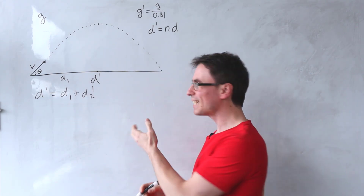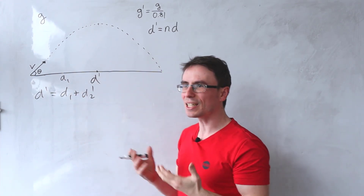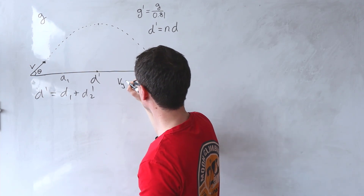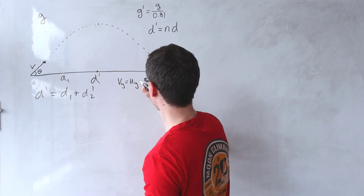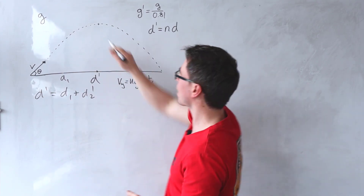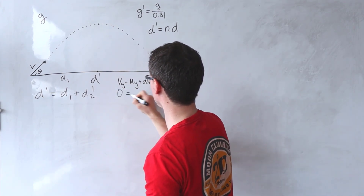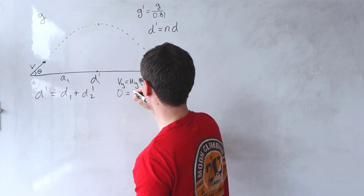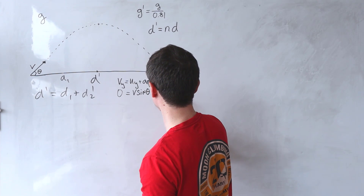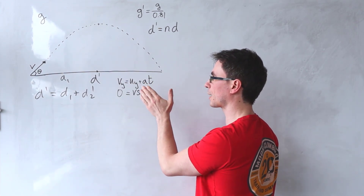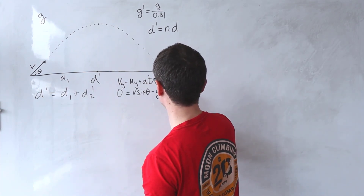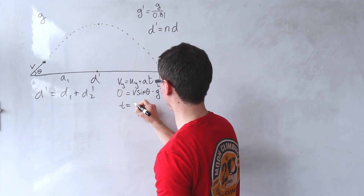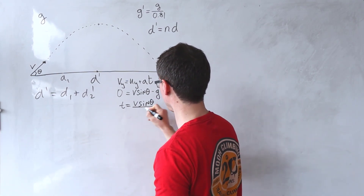This is a typical projectile motion problem to begin with. To figure out d1, I need to know the time of flight. In the y direction, the final speed vy equals uy plus acceleration times time. At maximum height, vy equals 0. The initial speed in the y direction is v sine theta, and the acceleration slows the projectile vertically, so: 0 = v sine theta minus g times t. Rearranging, t equals v sine theta divided by g.